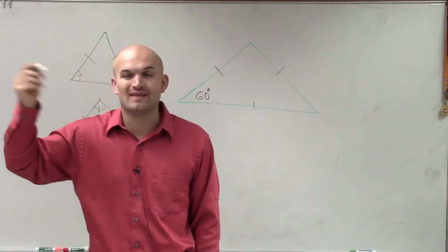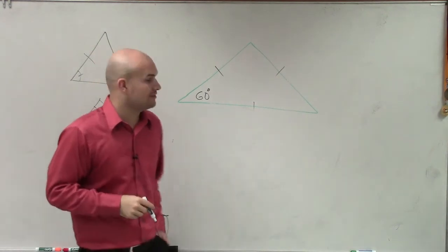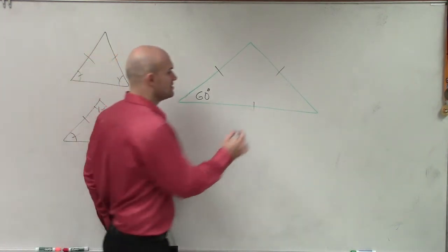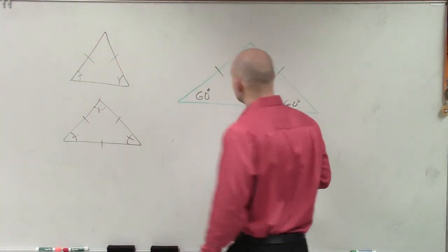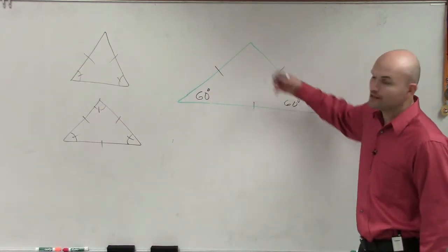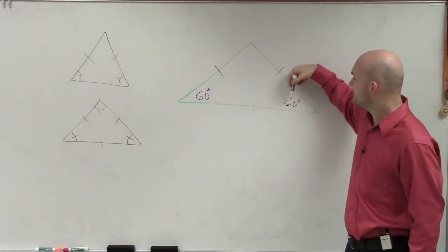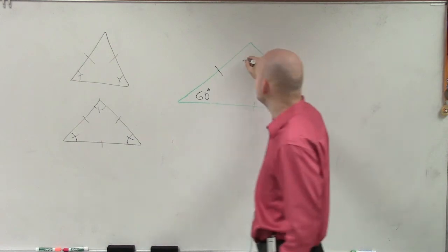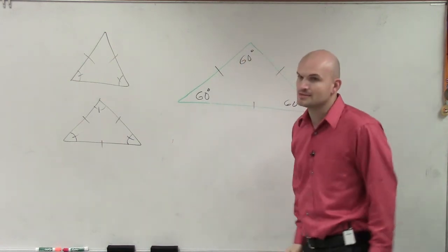And then when we have all the angles equal, we call this equiangular. So if that's 60 degrees, that means that has to be 60 degrees, right? And I know my triangle doesn't look perfect, but if that's 60, that's 60, then we know that this has to be 60 degrees as well.